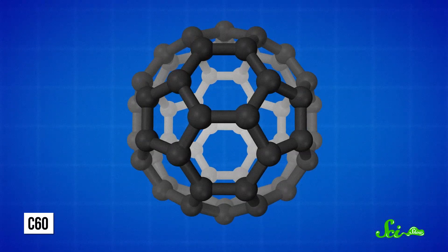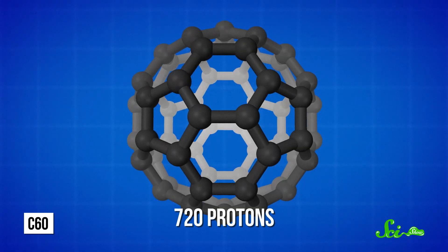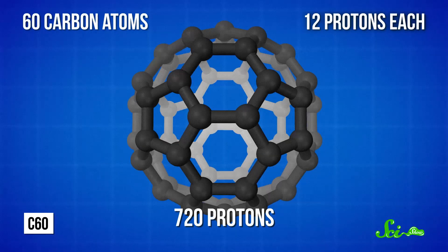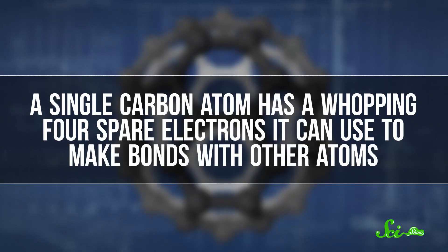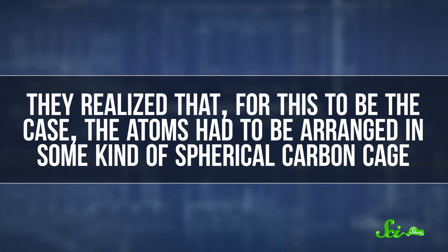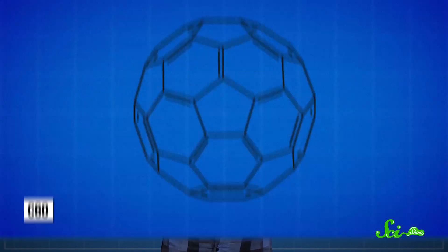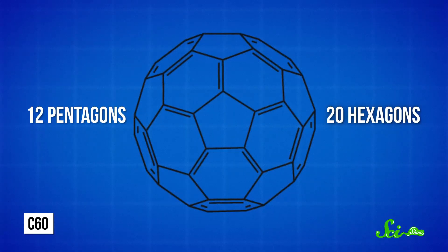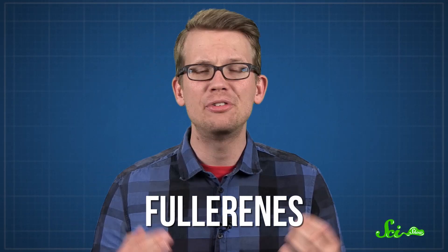It was an extremely stable carbon molecule with 720 protons, which meant it had to be made of exactly 60 carbon atoms with 12 protons each. And it didn't react easily with other molecules, which is unusual because a single carbon atom has a whopping four spare electrons that it can use to make bonds with other atoms. The fact that this new molecule wasn't very reactive meant that each of these 60 carbon atoms had to have three of their electrons occupied with other carbons, and only one electron free. They realized that the atoms had to be arranged in some kind of spherical carbon cage, kind of like the geodesic dome that Buckminster Fuller had devised back in 1954. And just like in a European regulation football, the bonds had to be a mixture of 12 pentagons and 20 hexagons in order for the cage to close completely. They'd discovered a brand new form of carbon, fullerenes, or spherical carbon molecules.